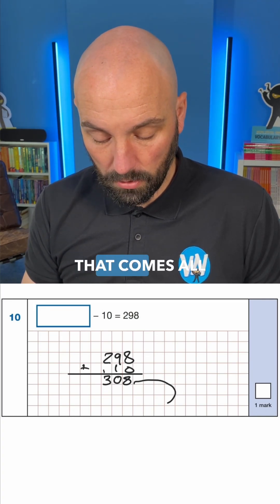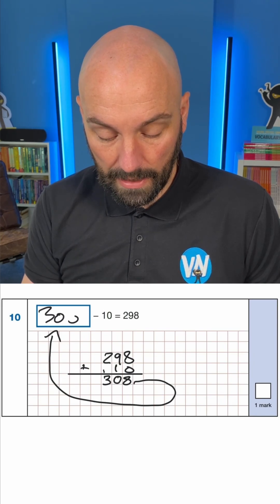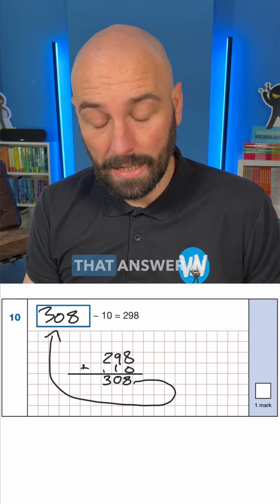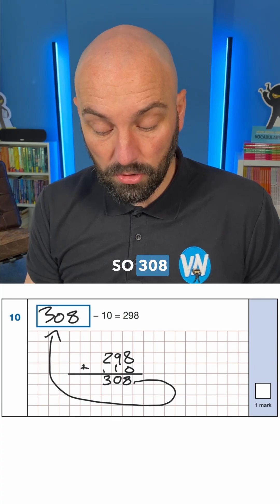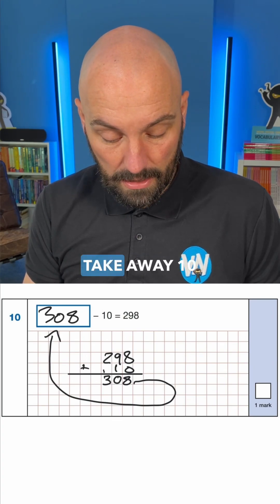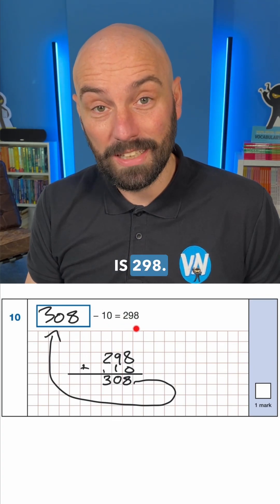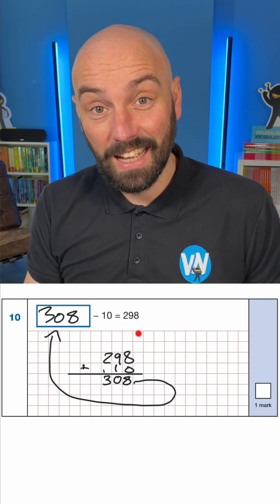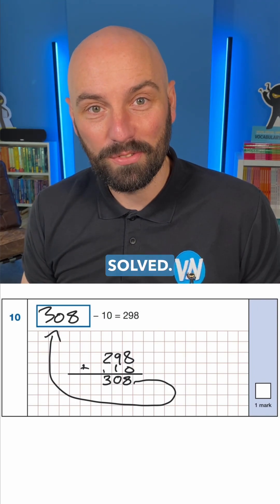That goes all the way around up to here — 308. And we must write that answer in the box. So 308 take away 10 is 298. And that is another SATs question solved.